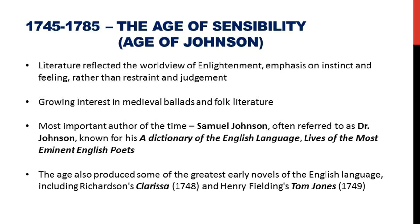The Age of Sensibility, or the Age of Johnson, is characterised by an enlightenment emphasis on instinct and feeling rather than restraint and judgment, and a growing interest in medieval ballads and folk literature. Samuel Johnson became one of the most notable writers of this time, known for works such as A Dictionary of the English Language and Lives of the Most Eminent English Poets. The age also gave us important early novels such as Richardson's Clarissa (1748) and Henry Fielding's Tom Jones.